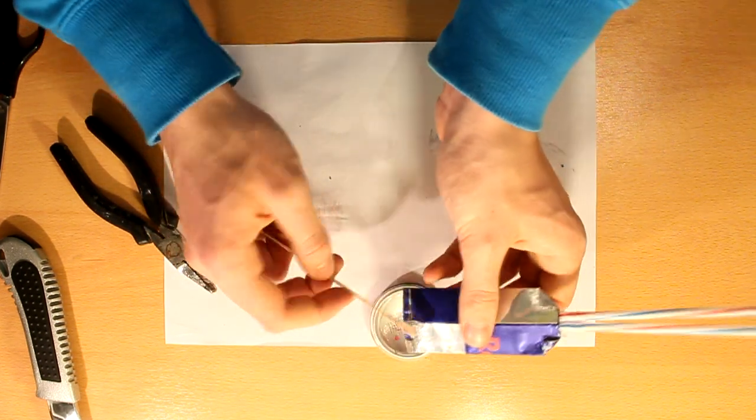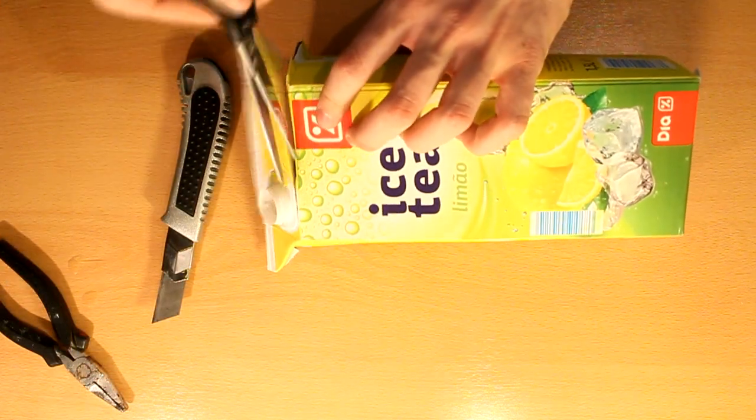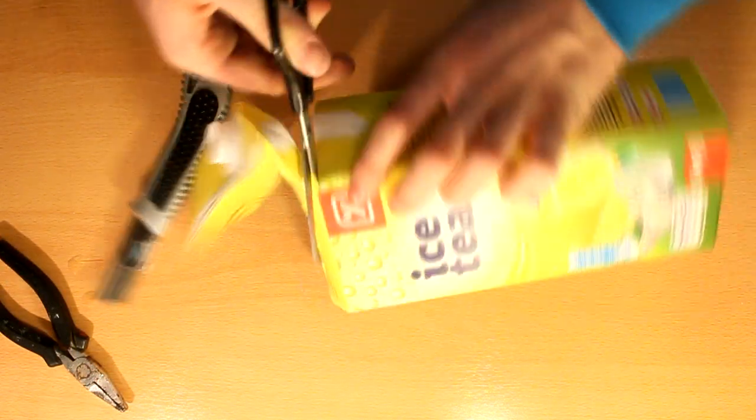While the epoxy glue dries, let's make the boat. Using the juice box, cut a rectangle 25 cm by 10.